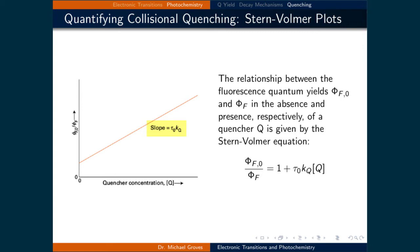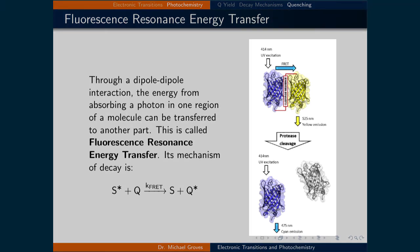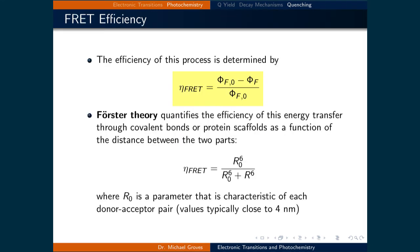Let's look at the second quenching process: fluorescence resonance energy transfer (FRET). Through a dipole-dipole interaction, the energy from absorbing a photon in one region of a molecule can be transferred to another part. This is an important process for light harvesting in many biological systems. The figure on the right illustrates FRET: part of the molecule absorbs light and is excited, then transfers that energy to a different part of the molecule which excites it. The excited second part then relaxes, giving off a photon. This process no longer works if the two parts are separated. It also works best with high overlap of the emission spectrum of S* with the absorption spectrum of Q.